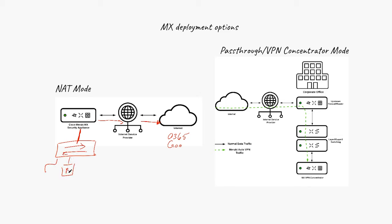You have Device B and Device A. Since you are connected to the internet service provider, normally what you're going to have is a public IP address — let's say 2.2.2.2. That's the one the service provider is going to assign to one interface on the MX.